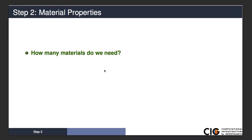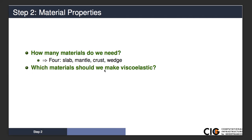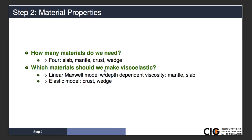How many materials do we need? We created four material blocks in our mesh, so we need four material models in PyLith. We'll have the slab, mantle, crust, and wedge. For the mantle and slab, we'll use a linear Maxwell model with a depth-dependent viscosity. For the crust and wedge, we'll use an elastic material.